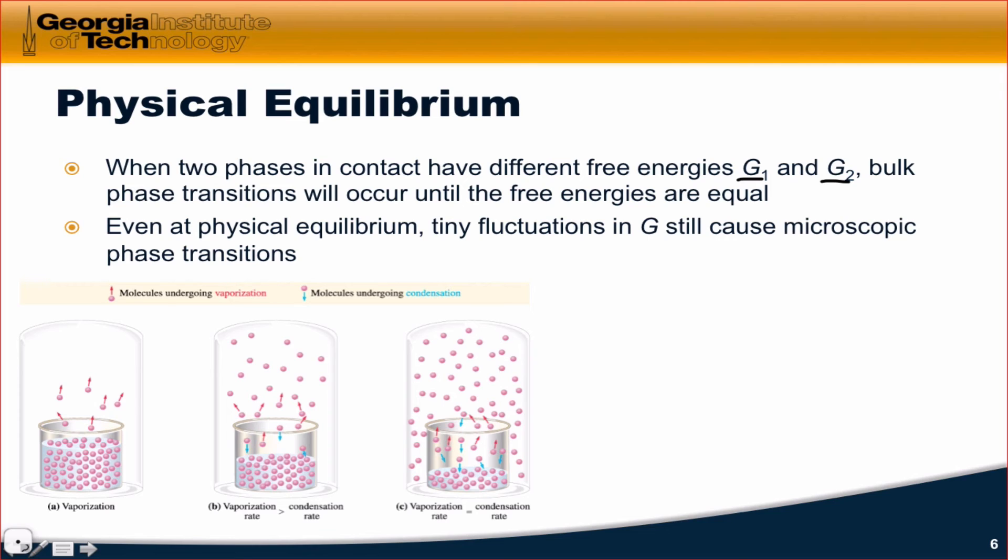A transition will occur, for example, to bring G1 down to the level of G2 and maybe G2 up a little bit. When we reach a state of physical equilibrium, do note that tiny fluctuations in G may still occur, and so even at equilibrium, and the place to focus your attention is here in this equilibrium state, we still get some evaporation of liquid particles and condensation of gas particles.